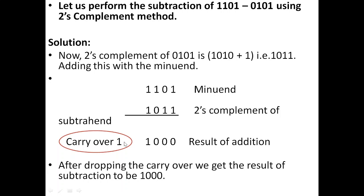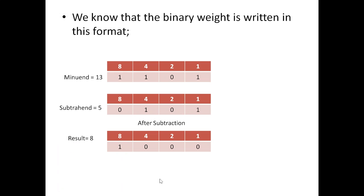Now add the subtrahend's two's complement with the minuend. What we get is 1000, and there is a carry which is 1. If there is a carry, this indicates that the result we have obtained is positive and we can easily neglect this carry. After dropping the carry we get the result as 1000.